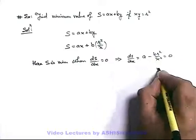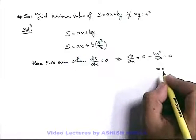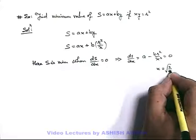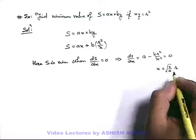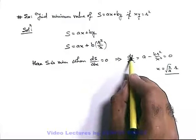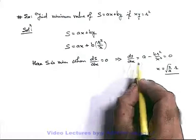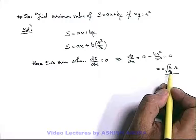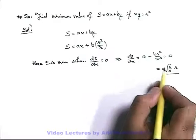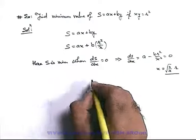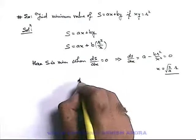On solving we get the value of x. The value of x can be written as the square root of (b/a) times r. This is the value of x for which the derivative of s with respect to x becomes zero. Now, just to check whether s is becoming maximum or minimum at this value of x, we find the second derivative.